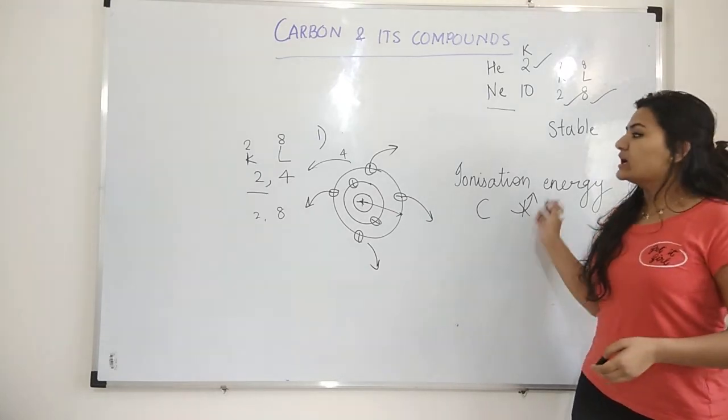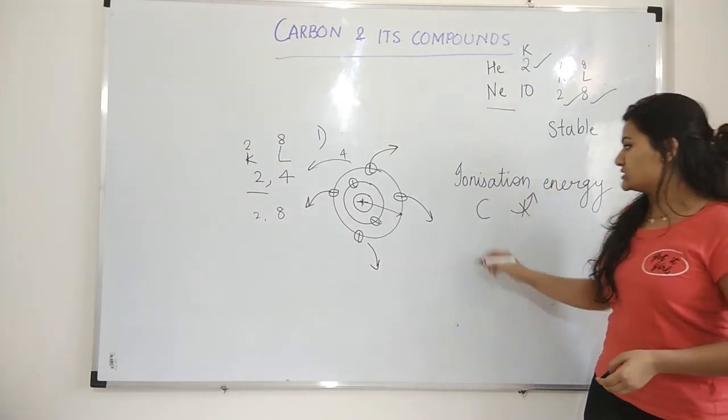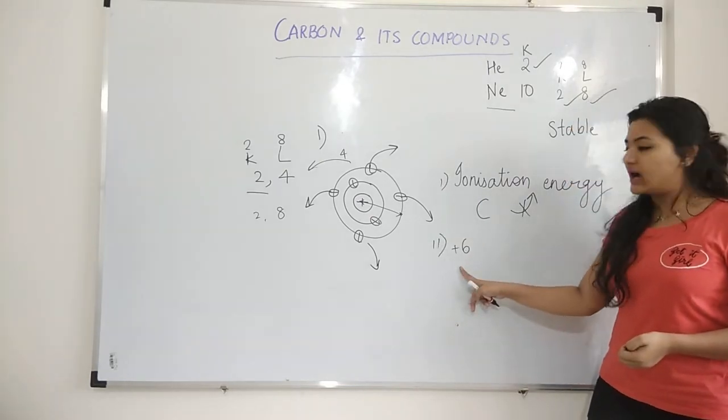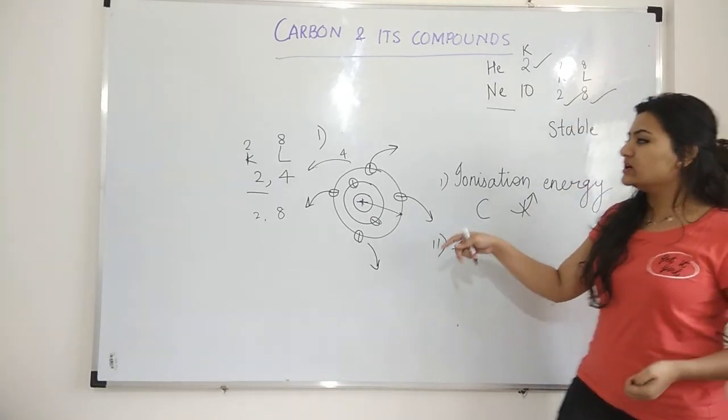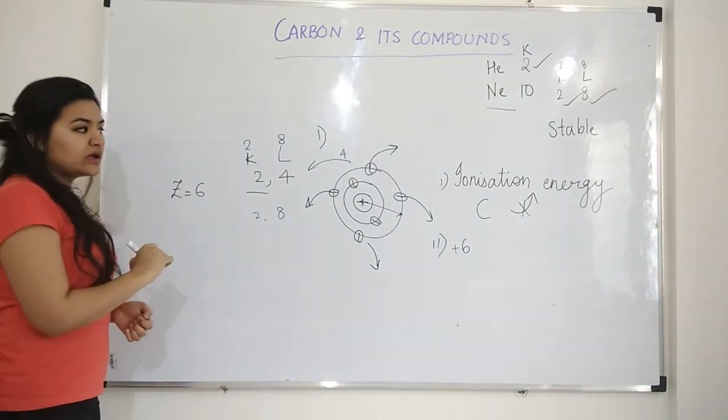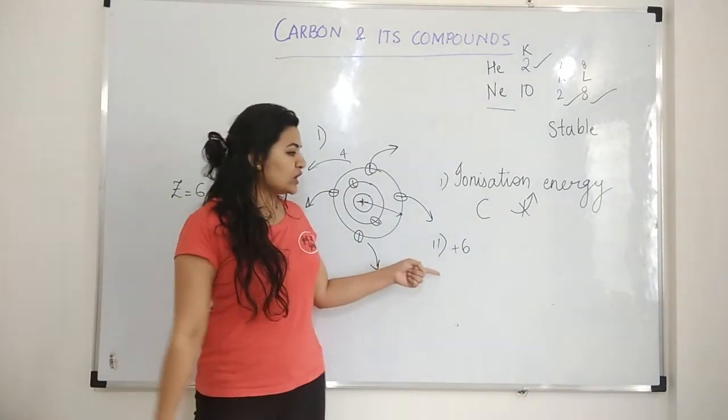Secondly, now if it has to take in four electrons. So total protons inside are six. As that is the atomic number of carbon. Right? So total protons are six.